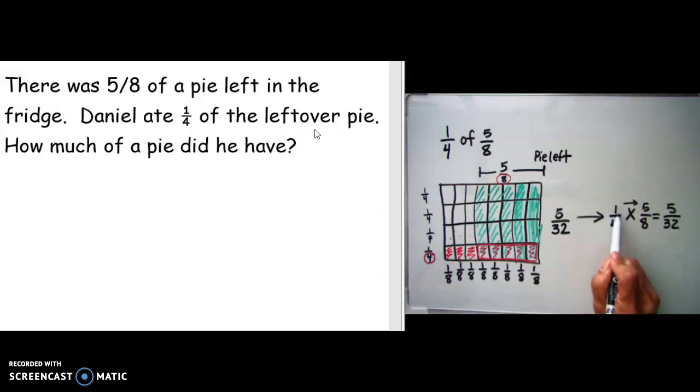So this is read as one-fourth of five-eighths. So our answer to this question is: Daniel ate five thirty-seconds of the pie.